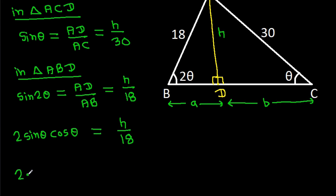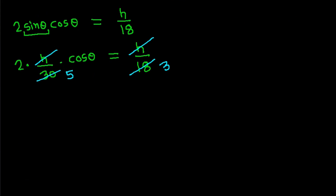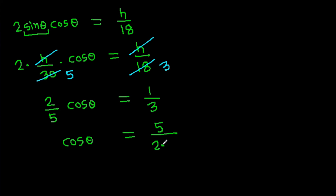Since sin(2 theta) equals 2 sin theta cos theta, we have 2 times (h/30) times cos theta equals h/18. The h cancels, and with 6 times 3 = 18 and 6 times 5 = 30, we get 2/(5) times cos theta equals 1/3, so cos theta equals 5 divided by (2 times 3), which is 5/6.